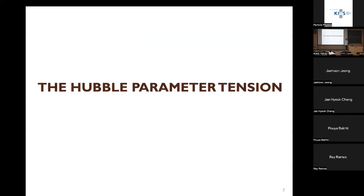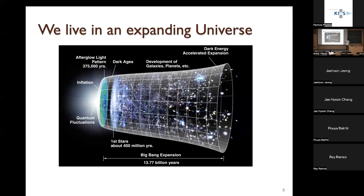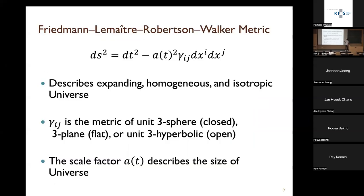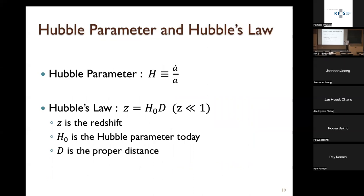Let me briefly review the Hubble parameter tension. We live in an expanding universe, and a natural question is: what is the speed of expansion? We can write the metric for an expanding, homogeneous, and isotropic universe described by the FLRW metric. The scale factor A describes the size of the universe, and the Hubble parameter is defined as the time derivative of A over A. We can measure the Hubble parameter today using Hubble flow: z equals H_0 times D, where z is the redshift of a source, H_0 is the Hubble parameter today, and D is the proper distance.